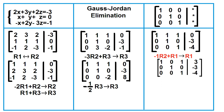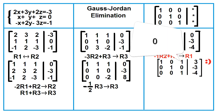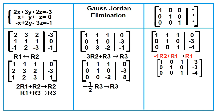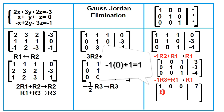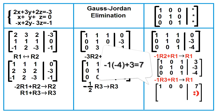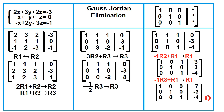Copy row 2 and row 3. To make row 1, column 3 equal to 0, multiply negative 1 to row 3, add row 1, then replace row 1 with the sum. Negative 1 times 0 plus 1 equals 1; negative 1 times 0 plus 0 equals 0; negative 1 times 0 plus 0 equals 0; negative 1 times 1 plus 1 equals 0; negative 1 times negative 4 plus 3 equals 7. Copy row 2 and row 3.